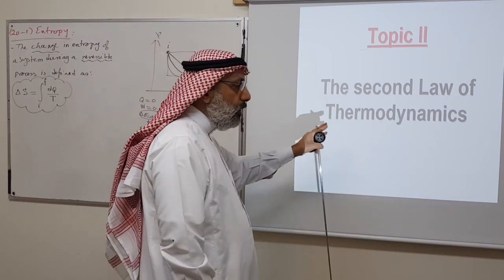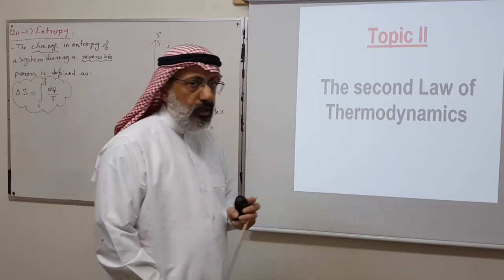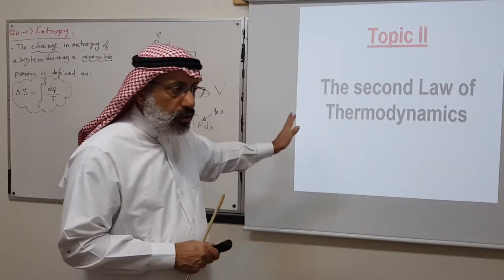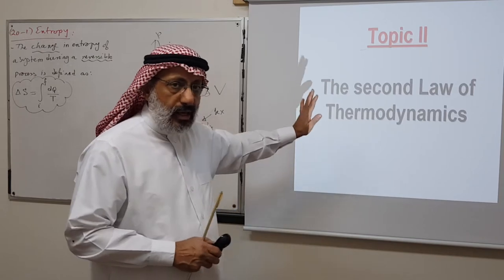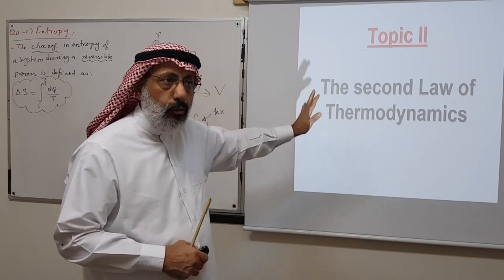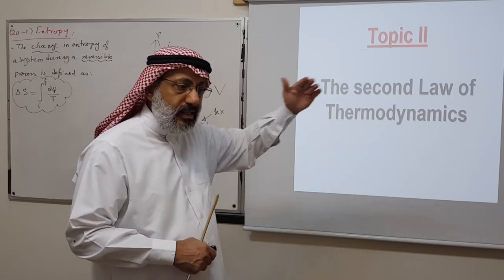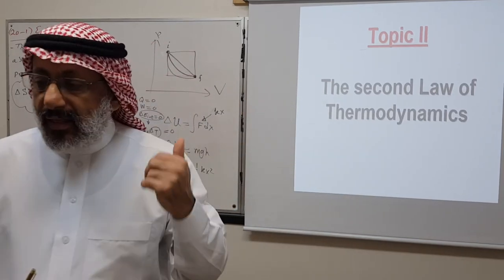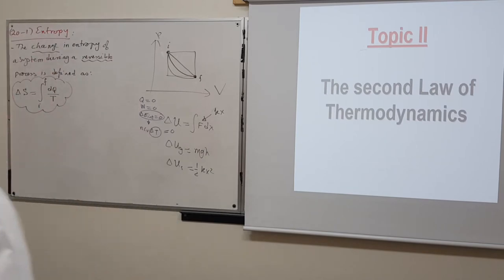To summarize the trick: to find the entropy change for an irreversible process in a closed system, replace it with a reversible process connecting the same initial and final states, calculate ΔS for the reversible process, and that equals ΔS for the irreversible process.